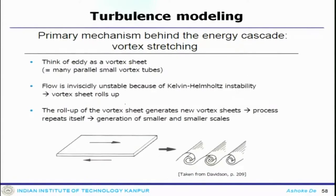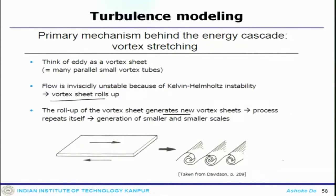One can think of it as a vortex street — many parallel small vortex tubes. The flow is inviscidly unstable because the vortex sheet rolls up, and once that rolls up it generates new vortex sheets. This process continues, generating smaller and smaller scales — that is how from larger scale to smaller scale this process repeats, generating different scales of vorticity.